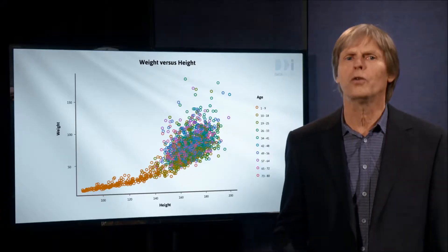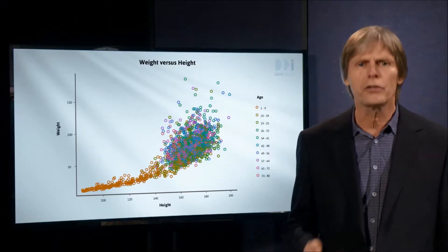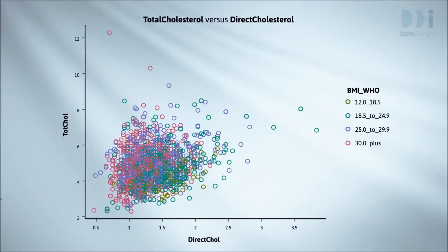It can also be useful to ask for different trends for each color group. This is a graph of total cholesterol versus direct cholesterol, colored by a World Health Organization obesity measure. A different trend line has been added for each of these groups. The trend lines for the higher BMI values are displaced upwards, telling us that for a given direct cholesterol, total cholesterol increases with increasing obesity. There are also small differences in the slopes of the lines.